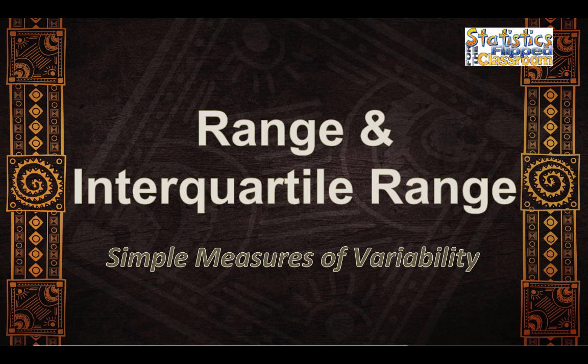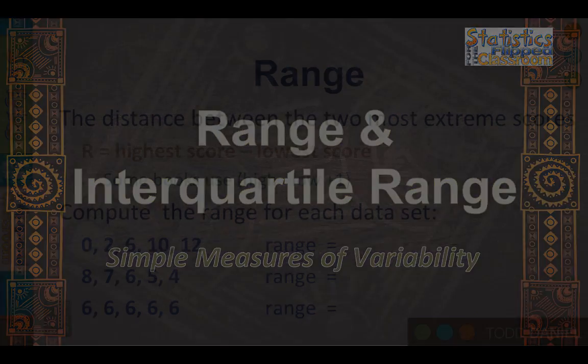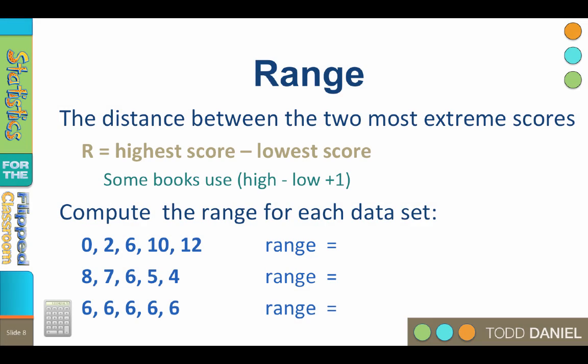We will begin with two simple measures of variability, the range and the interquartile range. Range, abbreviated capital R, is the variability between the two most extreme scores in the distribution.